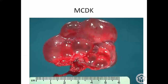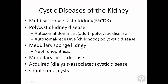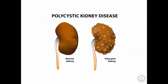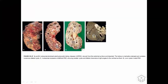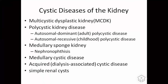The next condition is medullary sponge kidney. On an IVU urogram, you will see a lot of contrast in dilated collecting ducts. You can see the cortex, the papilla, and the dilated collecting ducts forming a sponge-like appearance in the medulla. Usually it won't cause any problem, but some people develop stones inside. Just remember the terminology for medullary sponge kidney.